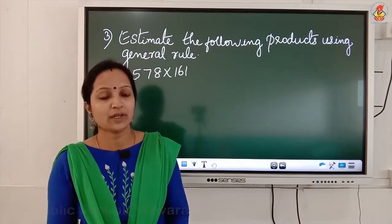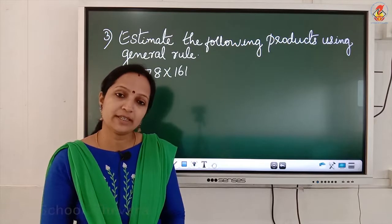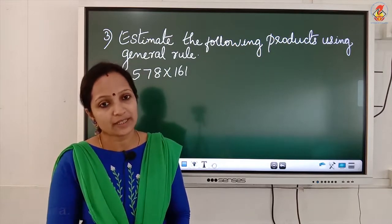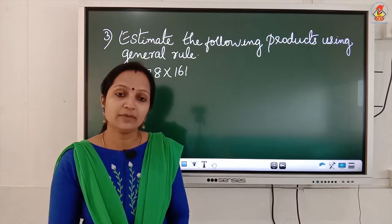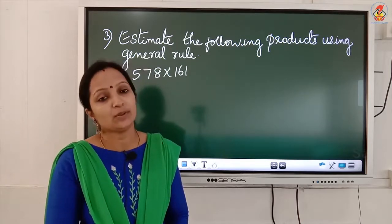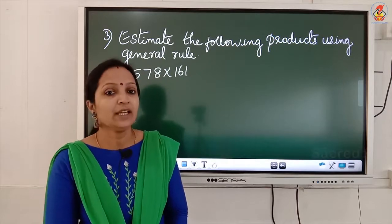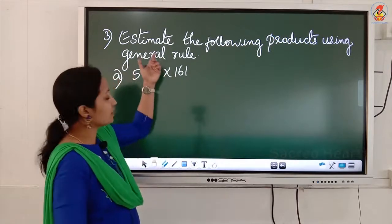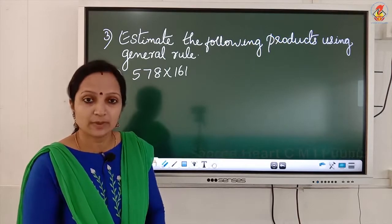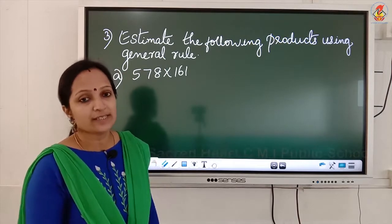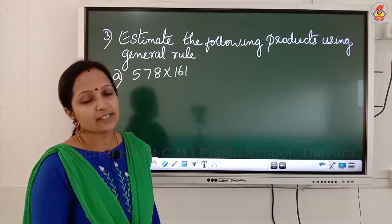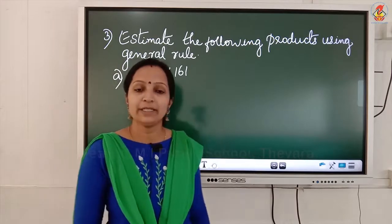Greatest place means: if it is a 3-digit number, the greatest place is the hundreds place. If it is a 4-digit number, the greatest place is 1000. Always round off the number to the greatest place, then do the multiplication. If the word 'estimation' is in the question, do not do the multiplication without rounding first — your answer will be wrong.